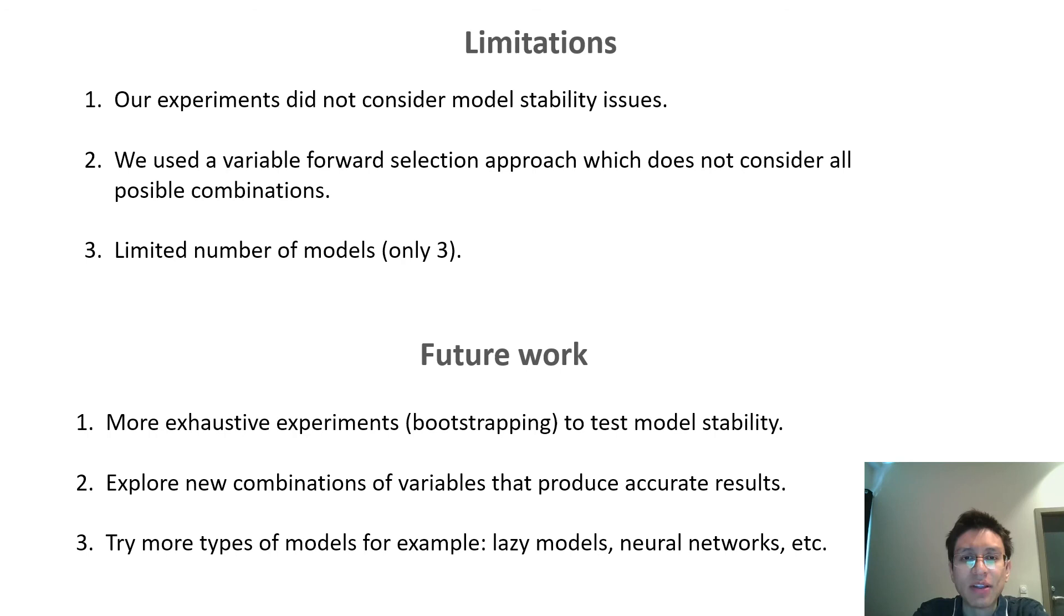These are some of the limitations of our work. In our experiments we did not consider model stability issues. This means that the models can produce very different results when introducing small variations in the training data. We also used a variable forward selection approach, which does not consider all possible variable combinations. And finally we used a limited number of models, only three, including random forest, linear regression, and regression tree.